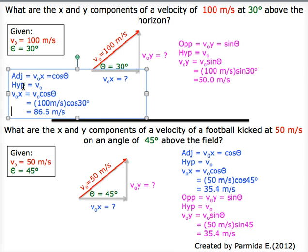To solve the x component, based on trig ratios, we can see that v naught x is v naught cos theta right over here, which is equal to 100 meters per second times cos of 30 degrees, which equals 86.6 meters per second.